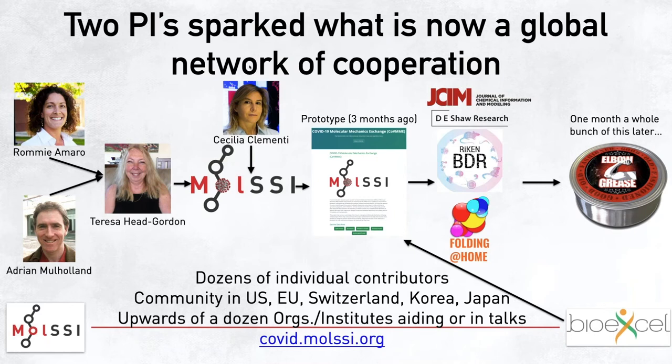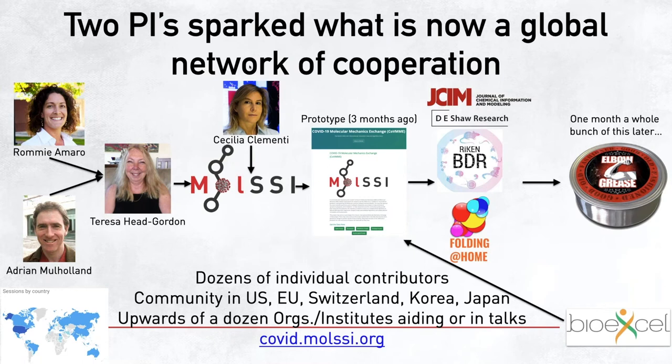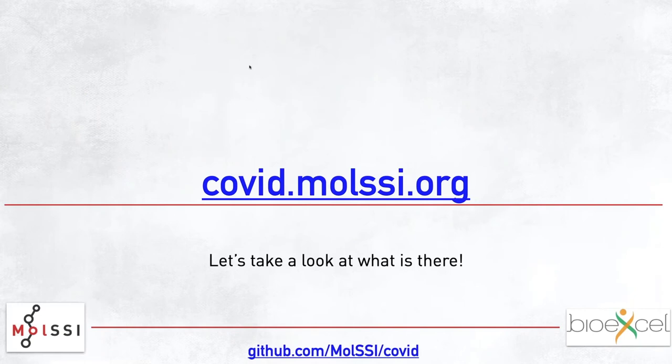About one month later, with a whole bunch of elbow grease and several software scientists at MolSSI, we managed to bring the hub to what it is now — contributions from several dozen research groups and all the individuals associated with them, a community spreading across the US, EU, Switzerland, Korea, and Japan. We have upwards of a dozen or so organizations and institutes wanting to contribute efforts, resources, and tools. This comes out to about 2,500 to 3,000 different points of contact over the course of the last couple of months.